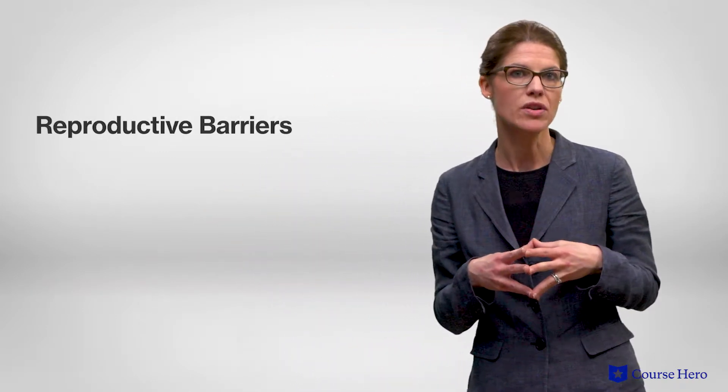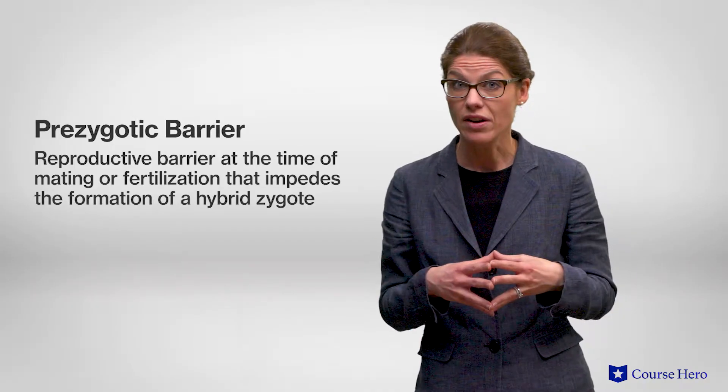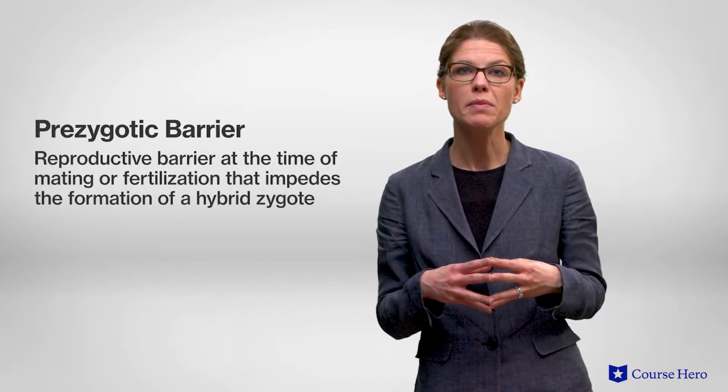So what would happen if two closely related species, which originated from one species, say due to a geographical barrier, ended up living in the same region? Would they be able to mate? They wouldn't, and this is due to the reproductive barriers that keep species distinct from each other. There are two types of reproductive barriers, known as prezygotic and postzygotic barriers. A prezygotic barrier is a reproductive barrier at the time of mating or fertilization that impedes the formation of a hybrid zygote.